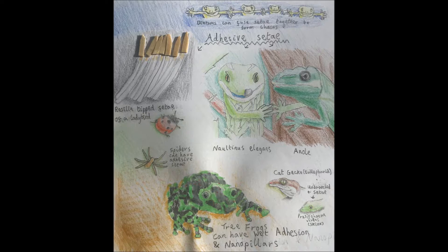Setae aren't just present in animals and aren't necessarily adhesive. Hair-like structures in plants can also be called setae. In algae called diatoms, diatoms can have setae and can form chains by fusing setae together — somewhat like a chain of geckos holding toe pads.